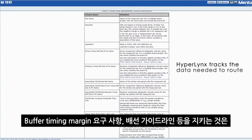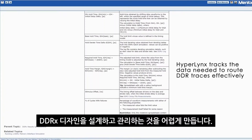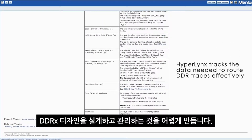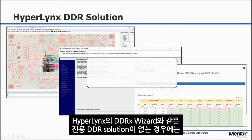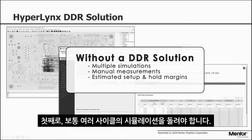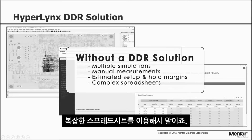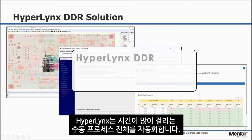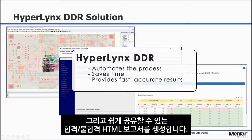Keeping track of buffer timing margin requirements, routing guidelines and so on makes creating and maintaining a DDR-X design tricky. Without a dedicated DDR solution such as that in Hyperlinks, one typically runs multi-cycle simulations, makes manual measurements and estimates, and sets up hold margins using a complex spreadsheet.